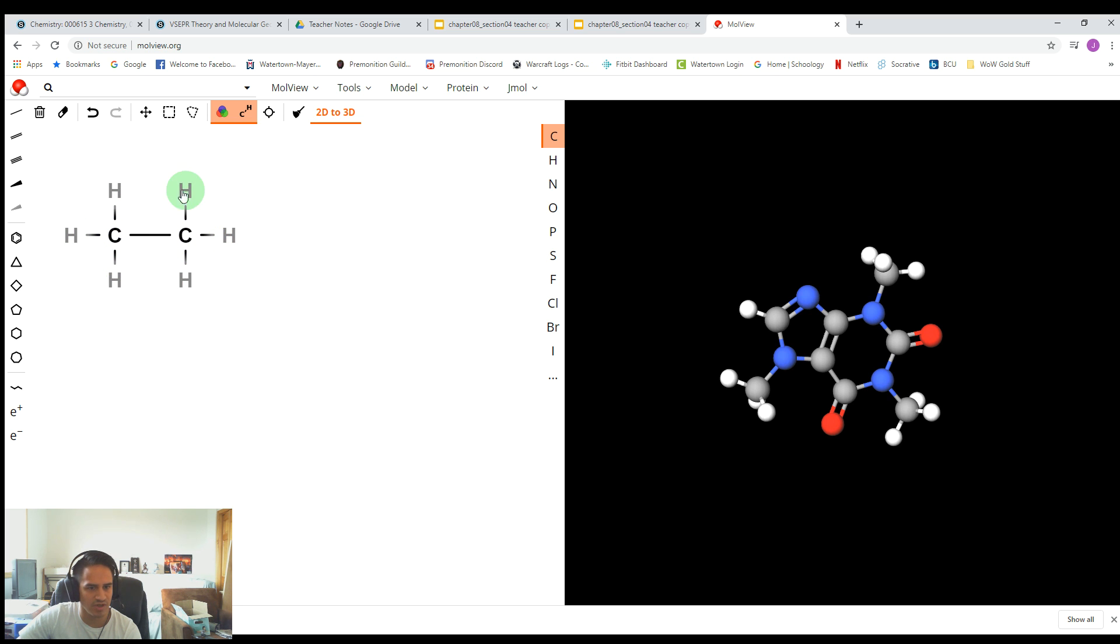So MolView is smart enough to know just to do that, but obviously, in real life, you would need to draw C and then C, and you'd have to draw these Hs in. MolView just does it for you, so it saves you a little bit of time, which is kind of nice. Anyway, so maybe this is a bad example. So let's just clear this real quick. Let's do a different one.